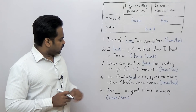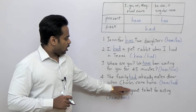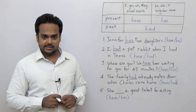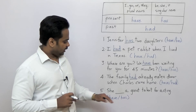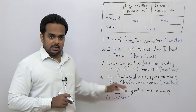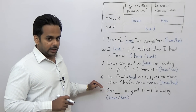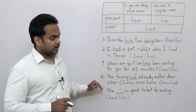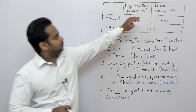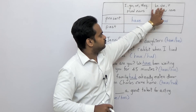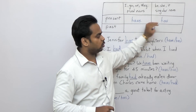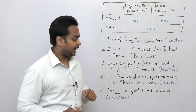Number five: 'She ___ a great talent for acting.' Have or has? This is in the present, and because the subject is 'she,' we're going to use 'has': 'She has a great talent for acting.'